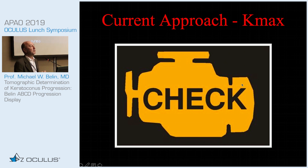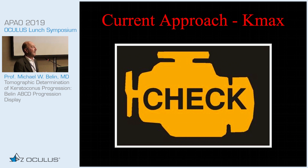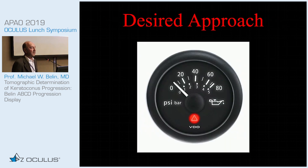It tells you when things have already gone bad — it's too late. When we use K-max, K-max tells us that the anterior surface, which is the major visual refracting surface, has already gone bad. What we really need is something to tell us when things are going bad before they actually go bad.